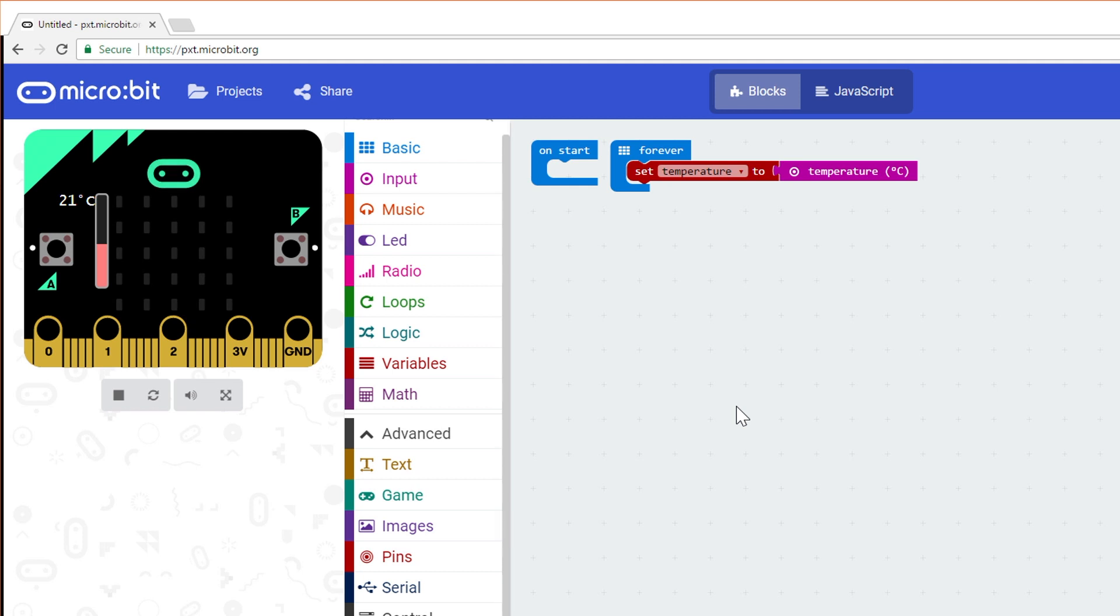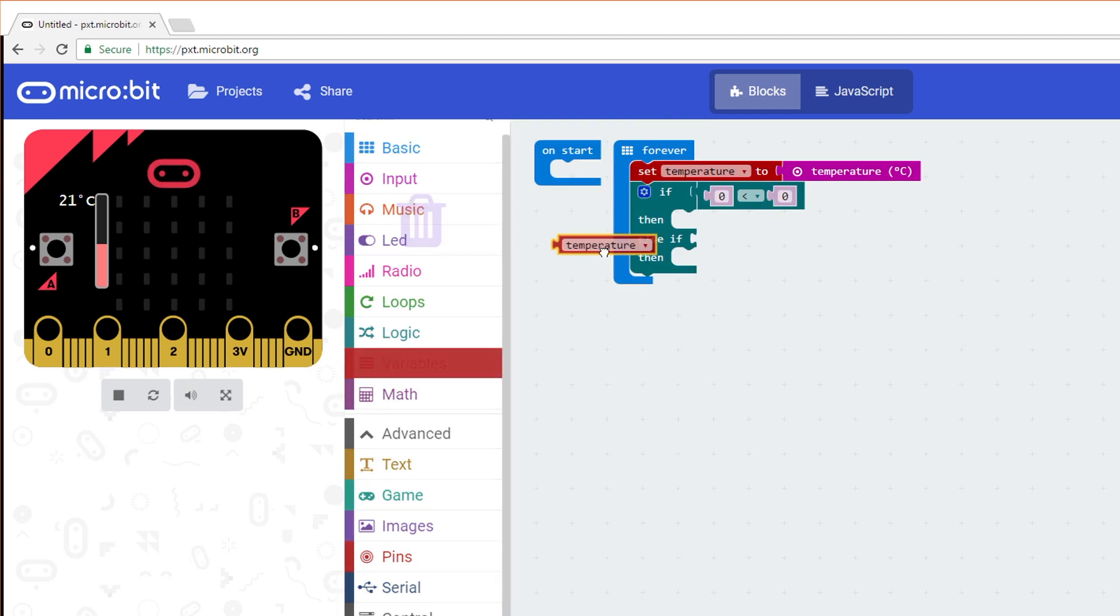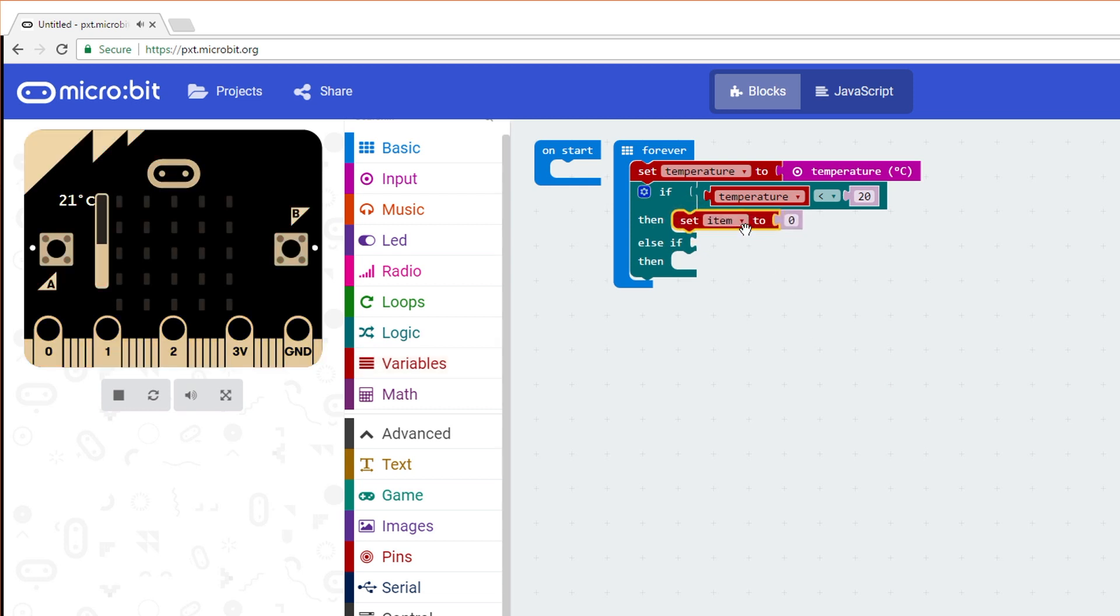Drag an If Then block from Logic and snap it under the Set Temperature block. Click the Settings icon and add an Else If block. Click the icon again to turn it off. Grab the Less Than block from Logic and snap it to the If portion of the If Then block. In Variables, drag a Temperature variable and snap it into the first number of the Less Than block. Change the second number to 20. Now, if the temperature reading is less than 20 degrees, True will be returned to the If condition. If it is less than 20, we'll just want to set Temperature to 20 since we don't want the gauge to go below this. Get a Set Item to block from Variables and snap it to the Then section. Change the variable to Temperature and change the number to 20.